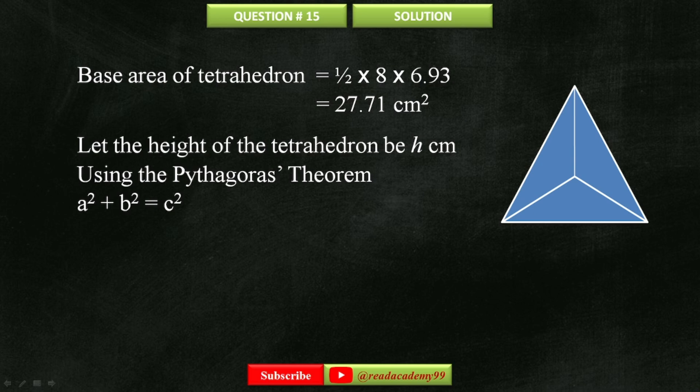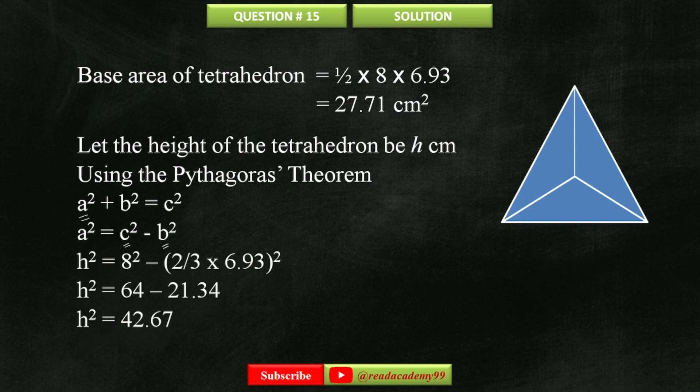To find A, I'm going to isolate this. Now I'm going to put the values of C and B. Simplify this. And we have H squared equals to 42.67. Take square root on both sides and H equals to 6.53.